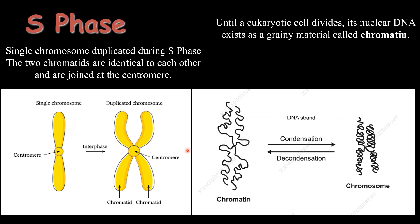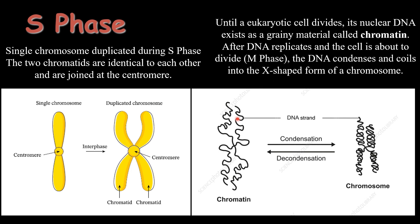Chromosomes are usually present in a loosely packed form known as chromatin. In eukaryotic cells, the nuclear DNA exists as a loosely packed material called chromatin, and this is how chromosomes appear in the S phase of the cell cycle. After DNA replication, when the cell is about to divide, the DNA condenses and coils into the X-shaped form of a chromosome. This condensed form can only be found during mitotic division.